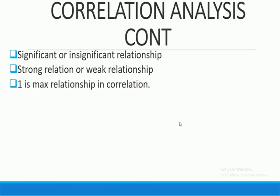One is the maximum value in correlation. If your correlation comes out to more than one, then your results are invalid. So the maximum limit is one — your maximum correlation can be 0.98 or 0.88, but it cannot cross the value of one. Correlation also tells you whether the relationship between your variables is positive or negative.